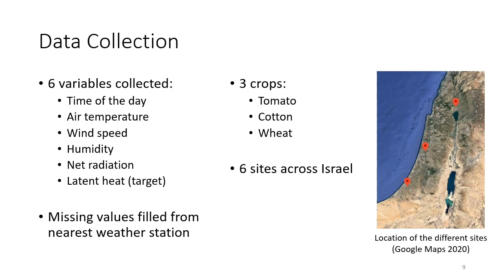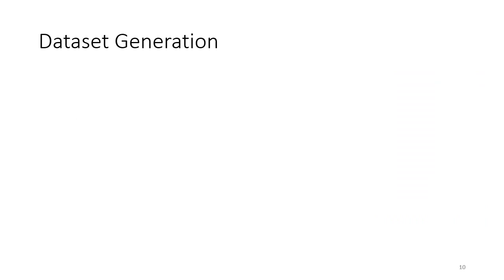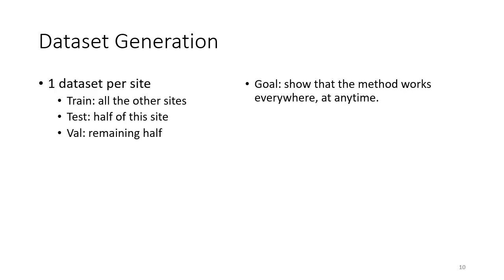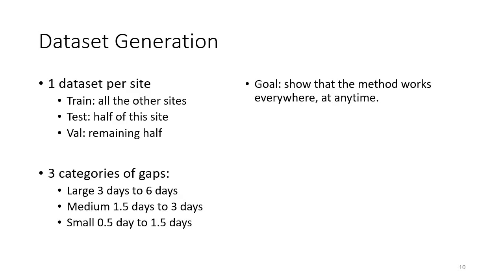How do we generate the data set for training on neural network? Our goal is to show that our method works everywhere on any field at any time. But because we are quite limited in terms of the amount of data, we have to be efficient with the way we manage this data. We create one data set per site by splitting it into a test and validation set. All the other sites are then used as training set. For each data set, we create three training configurations by considering three categories of gaps generated artificially. Large gaps cover three to six days, medium gaps 1.5 to 3 days, and small gaps 0.5 to 1.5 days. Finally, to maximize the representativity of the data, we make sure to distribute the training sequences over the complete growth season.